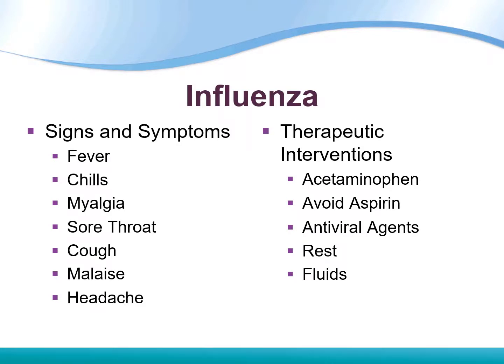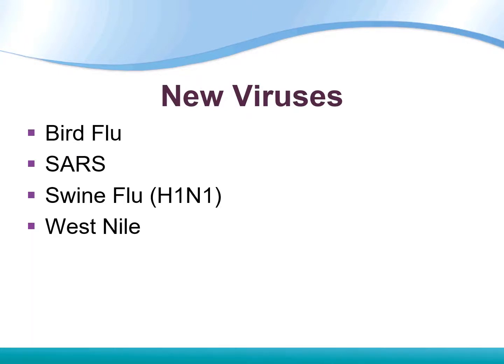Therapeutic interventions for influenza include acetaminophen, avoiding aspirin, and antiviral agents like Tamiflu. Tamiflu must be given within 48 hours of symptom onset or it likely won't work. Rest and fluids are also recommended. Be aware of newer viruses such as bird flu, SARS, swine flu, H1N1, and West Nile, and review those for the NCLEX.